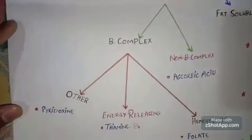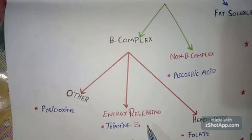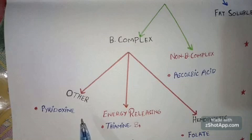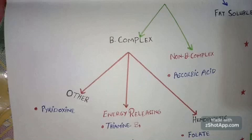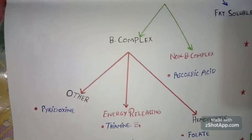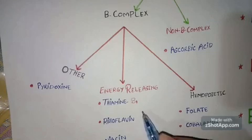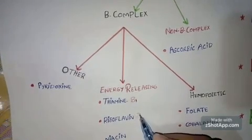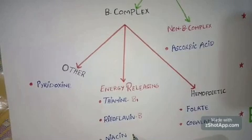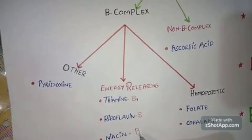The non-B complex group includes only one vitamin: ascorbic acid, which is also called vitamin C. Now, vitamin B complex is further divided into three groups: number one is energy-releasing, number two is hemopoietic, and number three is some other vitamins. The energy-releasing vitamins act mostly as coenzymes and are helpful in different metabolic processes — thiamine (vitamin B1), riboflavin (vitamin B2), and niacin (vitamin B3).